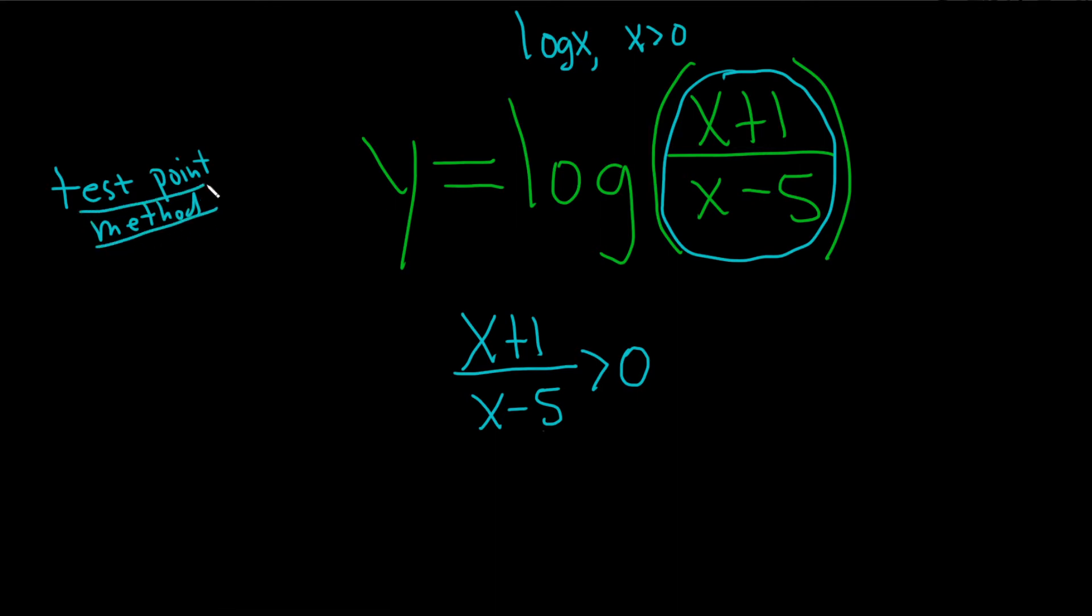Using the test point method, the first step is to make sure that we have a single term on one side and 0 on the other side. We have that in this problem.